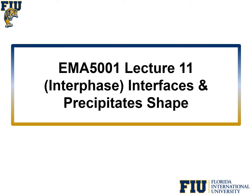Today we are going to talk about the last topic within the so-called surface, grain boundary, and interface category — interfaces. An interface is the boundary between two parts. Interfaces exist between different phases, and quite often here we are more talking about solid-solid phases. The surface is an interface between the bulk of a material and vacuum, but here we are particularly talking about the interface between two solid parts and its influence on the so-called precipitate shape.